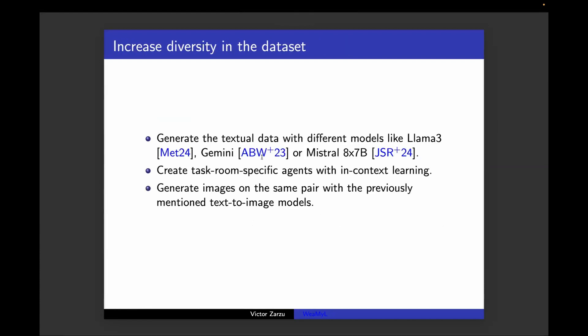To increase the diversity in the dataset, it just has to generate the textual data with different models like Llama 3, Gemini, or Mixtral, and to generate the images with different models as said before.